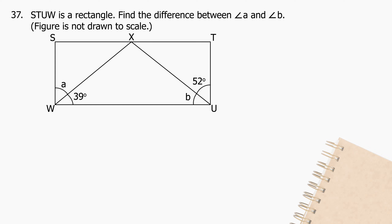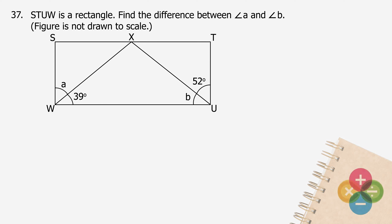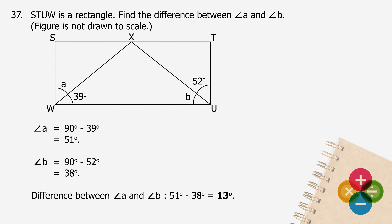Question 37: STUW is a rectangle. Find the difference between angle A and angle B. The figure is not drawn to scale. Angle A will be 90 degrees minus 39 degrees, and the difference is 51 degrees. Angle B will be 90 degrees minus 52 degrees, and the difference is 38 degrees. The difference between angle A and angle B will be 51 degrees minus 38 degrees, and the difference is 13 degrees.